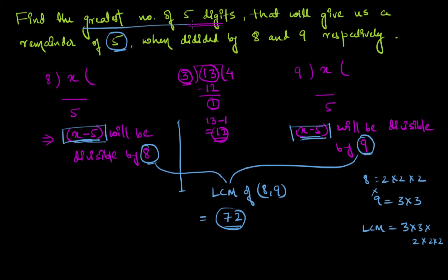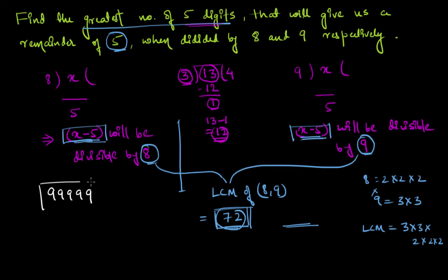Since we want the greatest five-digit number, we need to find the greatest five-digit multiple of 72. For that, I'll take the greatest five-digit number 99999 and divide it by 72 to check the remainder.